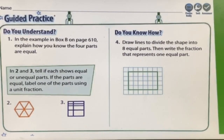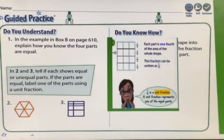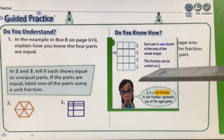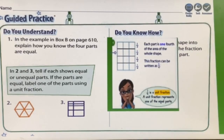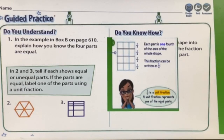Next page, question one: in example box B on page 610, explain how you know the four parts are equal. This question relates to the example on page 610. By counting, we can tell the region is divided into four equal parts.